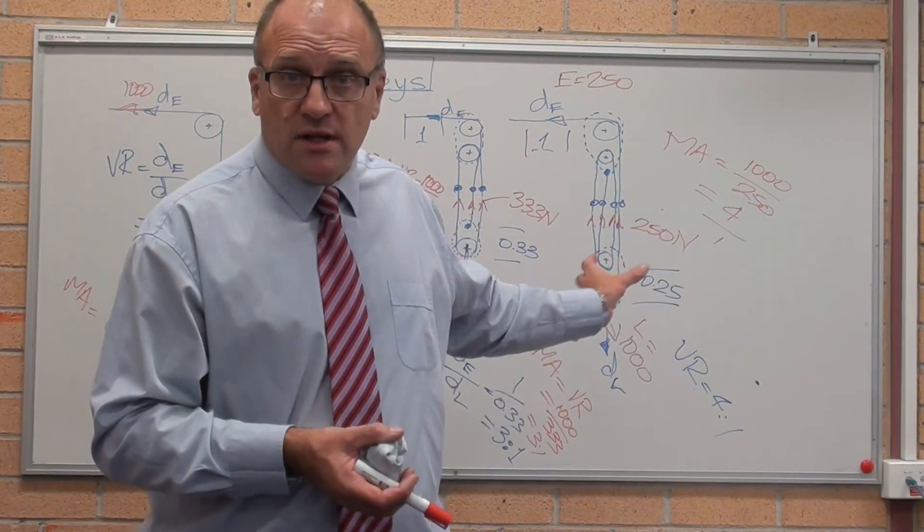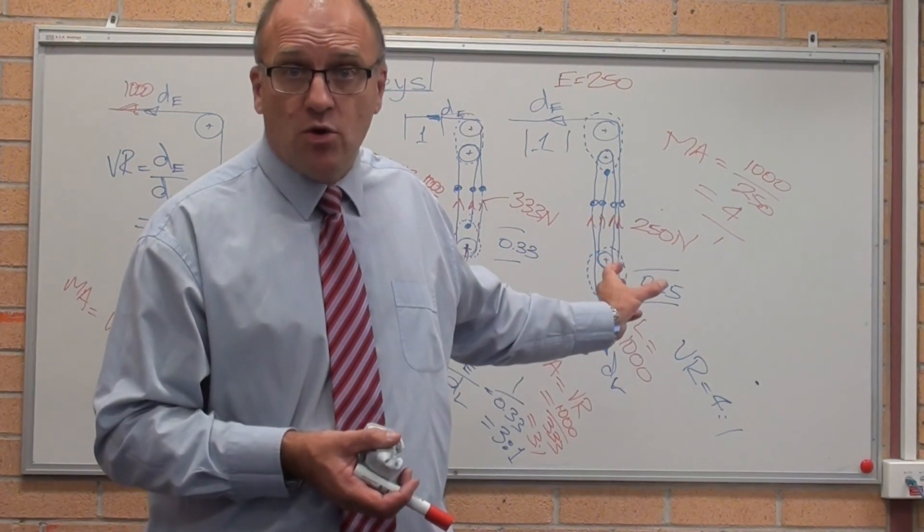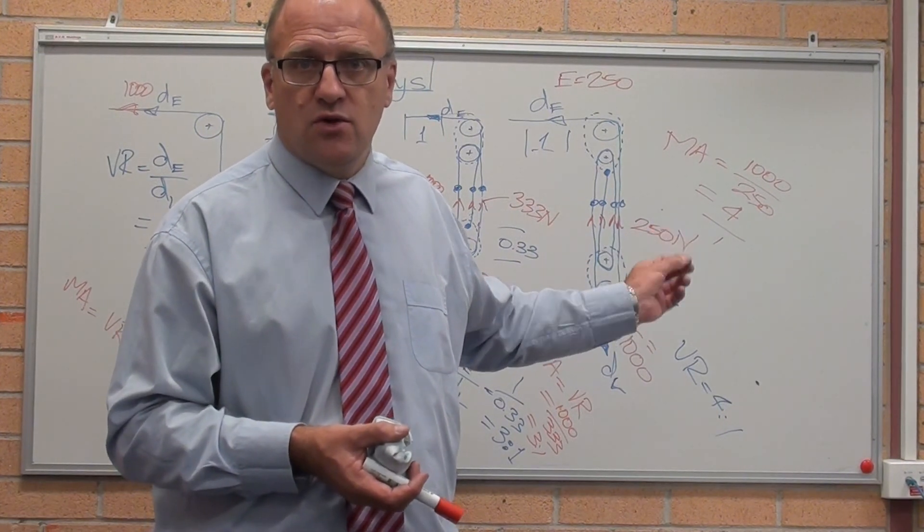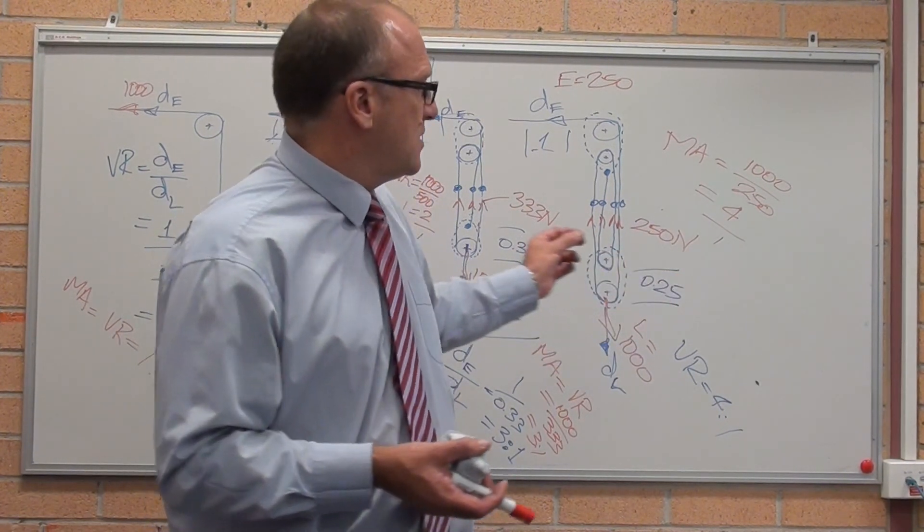Velocity ratio for a pulley system is count the number of ropes that are supporting the load. Do not count the ropes that are not.